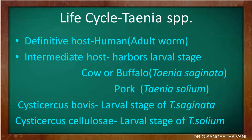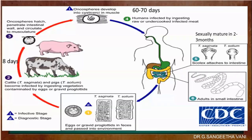Moving on to the life cycle: the definitive host is the human being. The adult worm lives in the human host. The intermediate host is the cow or buffalo in the case of Taenia saginata, and in the case of Taenia solium it is the pig — both harbor the larval stage. The larval stage of T. saginata is Cysticercus bovis, whereas in T. solium it is Cysticercus cellulosae. Both species have the same life cycle except for the different intermediate host.